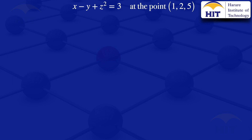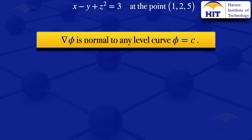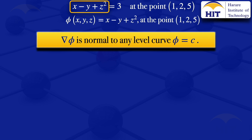From the properties of grad phi, we know that grad phi is normal to any level curve where phi equals a constant C. In this case, we have a scalar field on the left-hand side — x minus y plus z squared — equal to a constant on the right-hand side. So I would take that as my phi, giving us phi(x, y, z) = x minus y plus z squared.